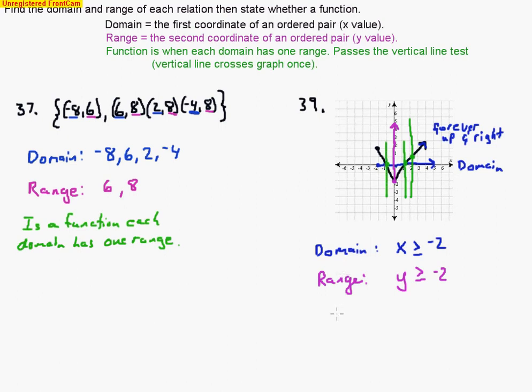So since it only crosses once, it passes the vertical line test. So we say it is a function, and the reason for that is that it passes not just the line test, but the vertical line test. And that's it. So domain is the x-coordinate, range is the y-coordinate, function is when each domain has only one range. If a domain repeats, typically that's not going to be a function.